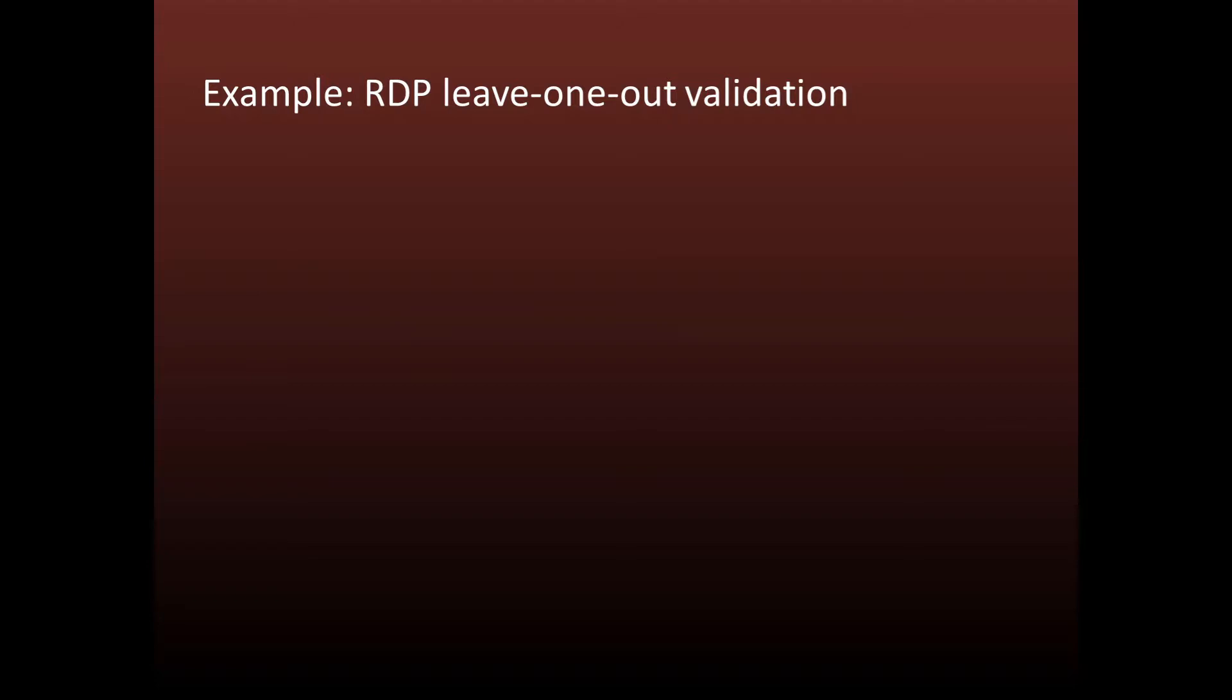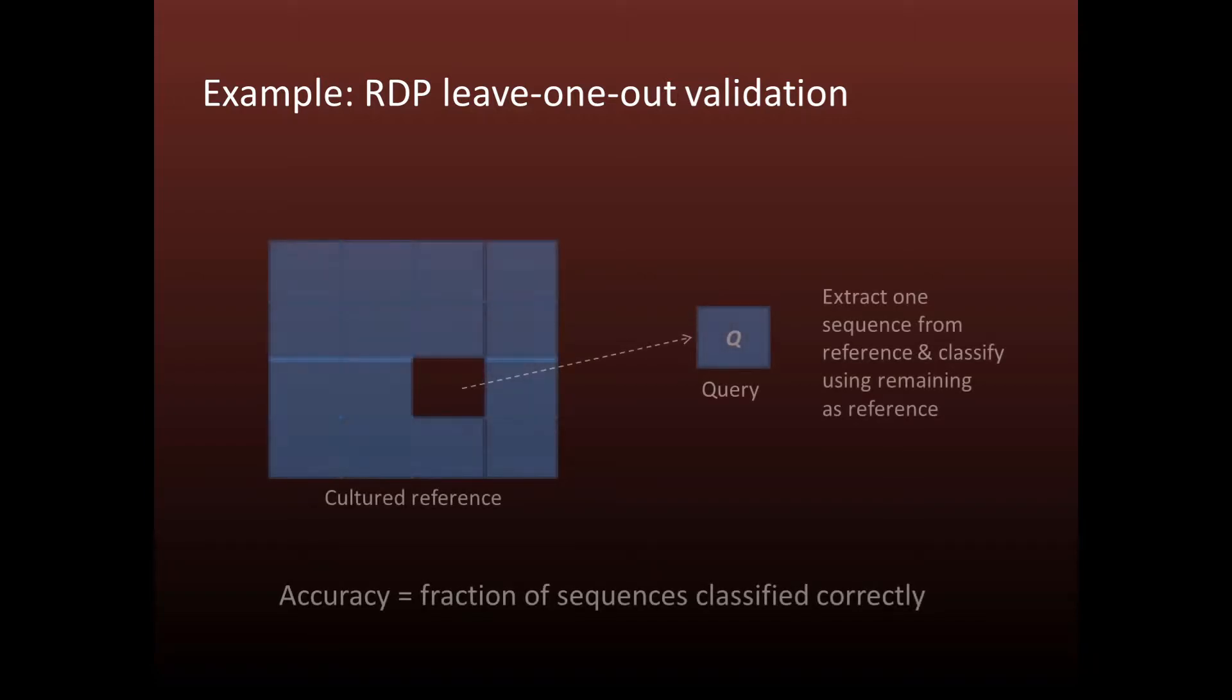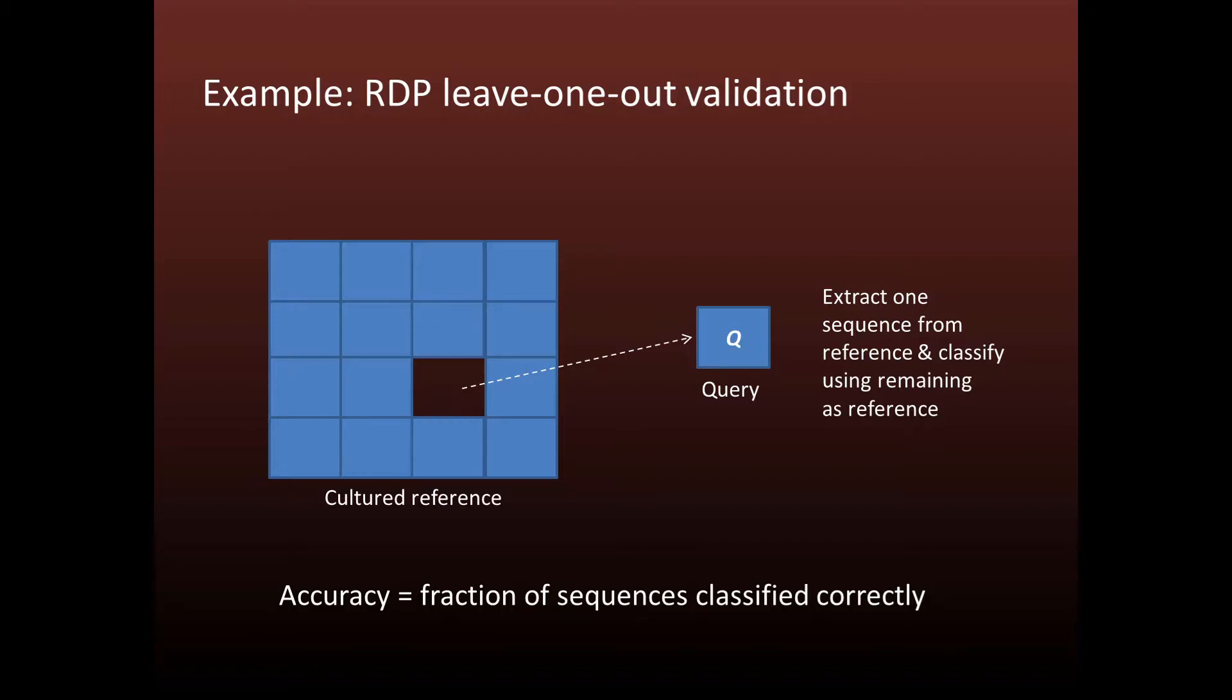I don't have time to go into detail on the problems in benchmarking, but to give you a sense of the difficulties, I'll briefly discuss one well known approach, the leave one out strategy used to validate the RDP classifier. With leave one out, each query sequence is extracted from the reference database and classified using the remaining sequences as a training set. Accuracy is measured as the fraction of query sequences that are classified correctly.